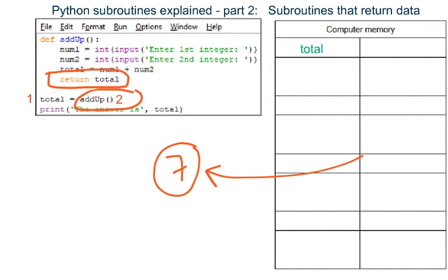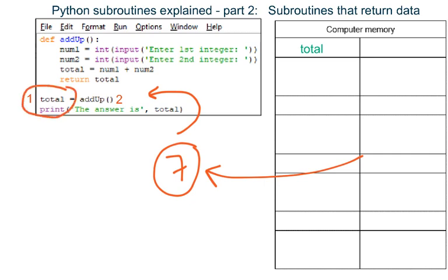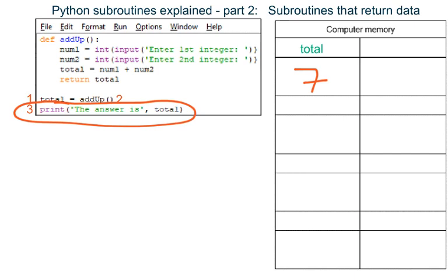Python takes the data with it when it returns to the place in the program where the subroutine was called. Here it finds a variable already made and waiting for the data returned by the subroutine to be stored in. Python tries to print out what is stored in variable total, and this time it works successfully because a variable called total still exists.